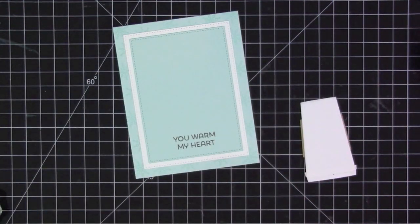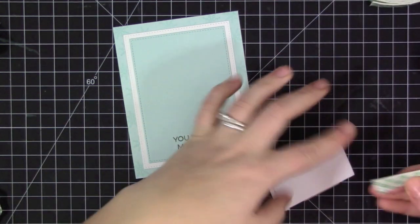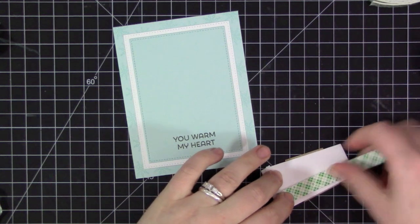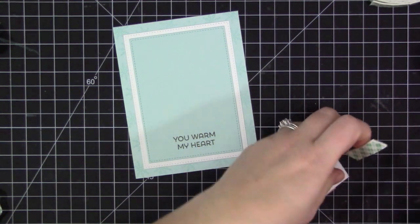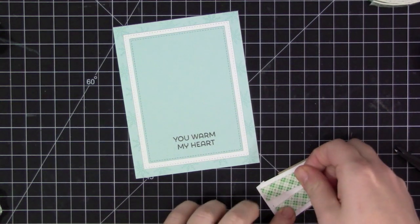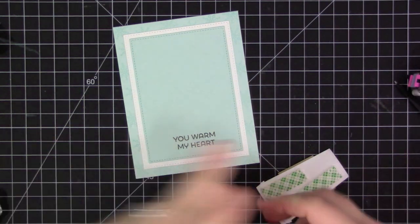So now that I have the sentiment on there, I went ahead and adhered all the pieces of card stock, and I'm going to add the cup that I've cut out here. So I'm going to use some foam adhesive to add the cup to it, and I'm just kind of putting two strips on. And this is going to give the perfect amount of dimension.